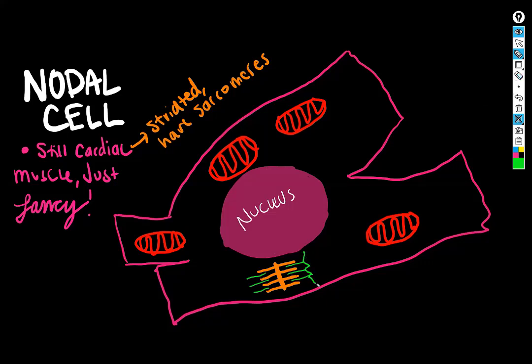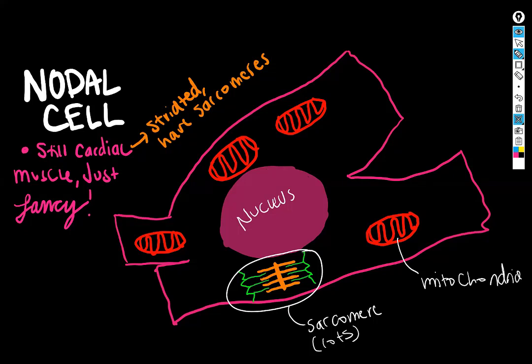And then I'll make our Z line slash disk. That's a mitochondrion. Again, you get the idea. So far, this has no differences from a contractile cell. So now we have to add those things in.